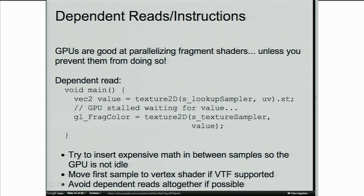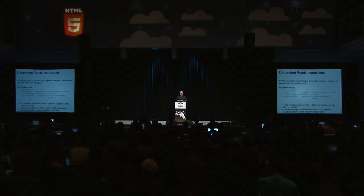Dependent texture reads in fragment shaders — where you look up into one texture to get a value used to look up into another texture — are lots of fun but very expensive. On modern desktop GPUs you might not feel it, but on older GPUs you definitely will. If you absolutely must do a dependent read, schedule it as you would in a computer architecture class: shove as much math as possible between your dependent reads so the GPU isn't sitting idle waiting for texture samples.